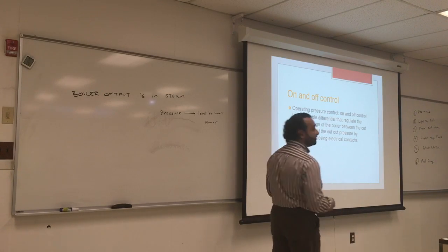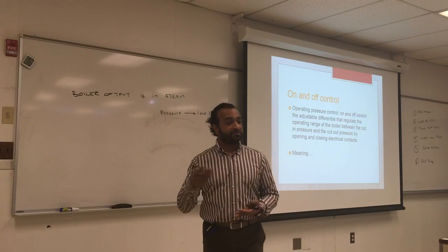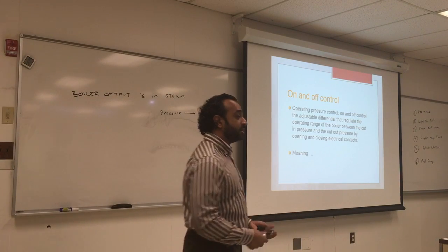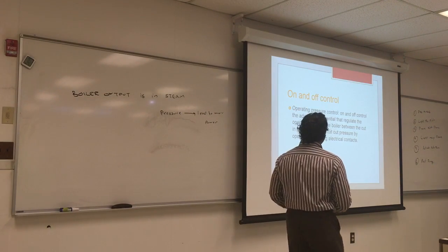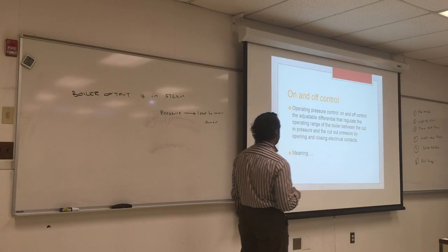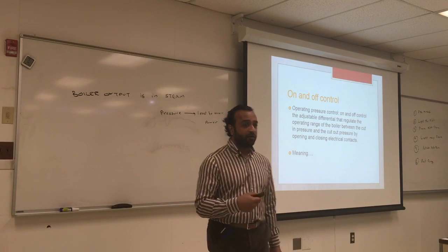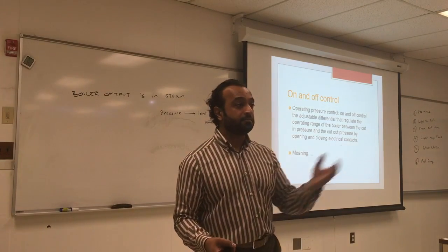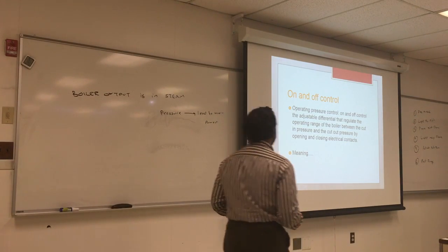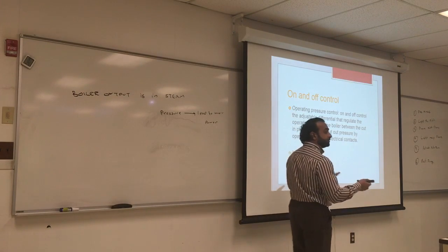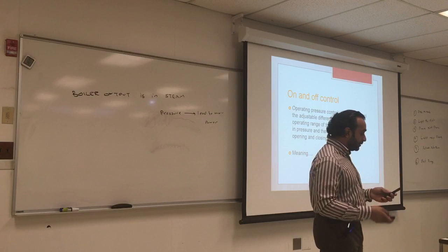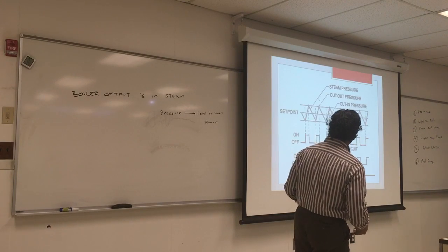So on and off: we turn the fire on, we have steam; fire off, no steam. More steam and less steam — it's an on and off situation. We adjust the differential that regulates the operating range for the boiler. The more fire you put, the fire will eventually become related directly to the steam. So we have a cut-in pressure and cut-out pressure. And sometimes we have steady flow.